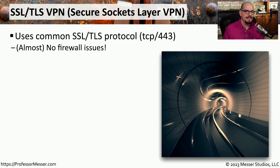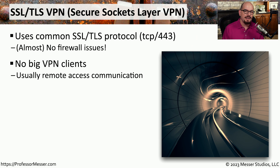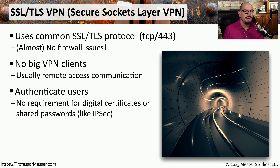If you're using a laptop, desktop, or some other mobile device to communicate across a VPN, you're probably using an SSL or TLS VPN — which stands for Secure Sockets Layer or Transport Layer Security. This is the same protocol used to encrypt web server traffic, so it runs over TCP port 443. Because we're using the same port numbers commonly used for encrypted web communication, it very easily passes through existing firewalls on our networks. An SSL VPN is commonly used for remote access communication from a single device, usually via a VPN client installed on the workstation or included in the operating system. We can use standard login credentials, digital certificates, or shared passwords.